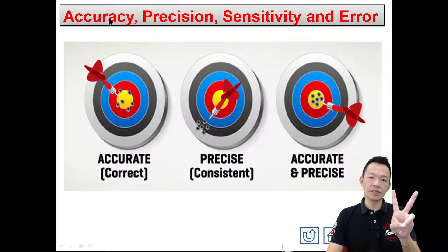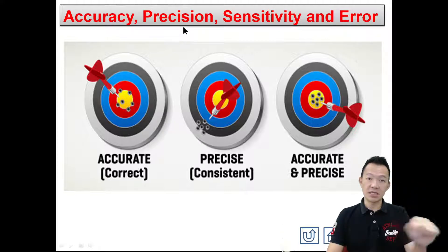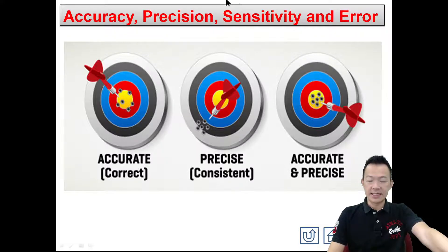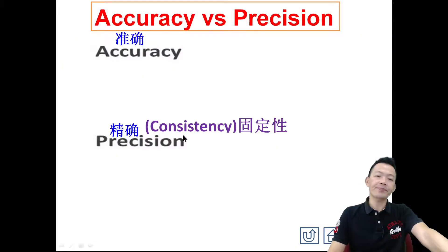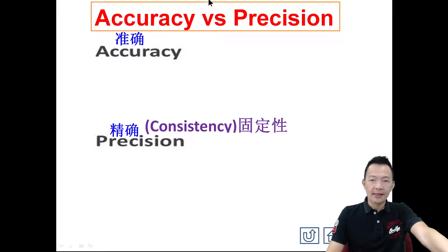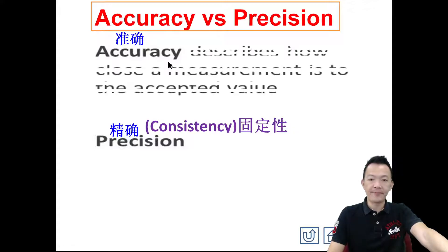We'll start with two words: accuracy and precision. Accuracy — 準確 — copy on your notes page number 12. So what is accuracy?